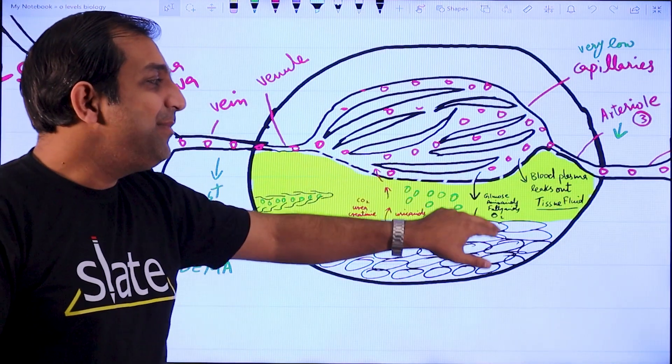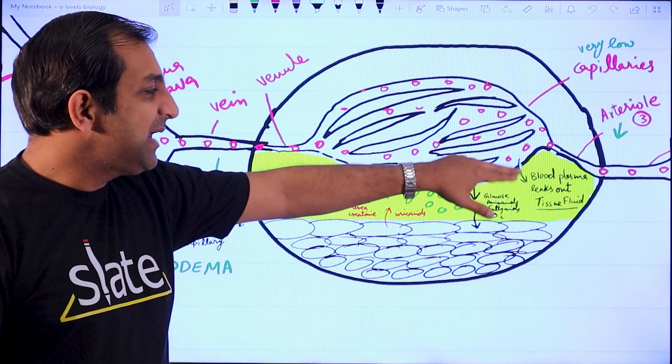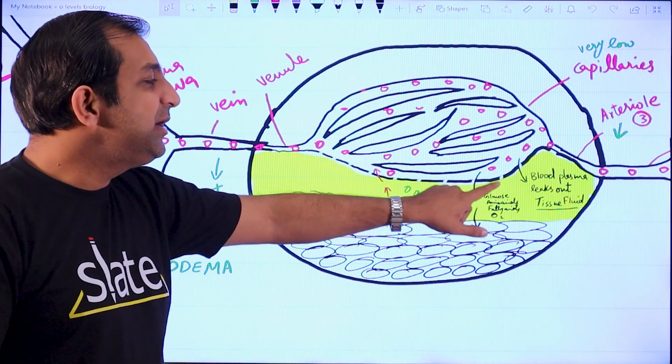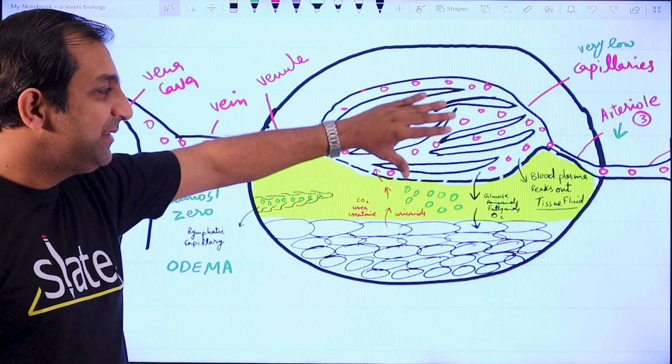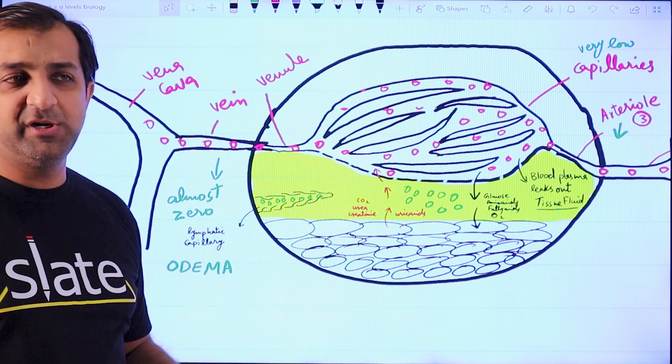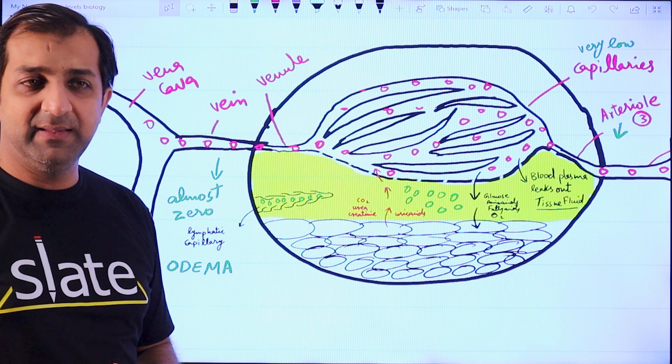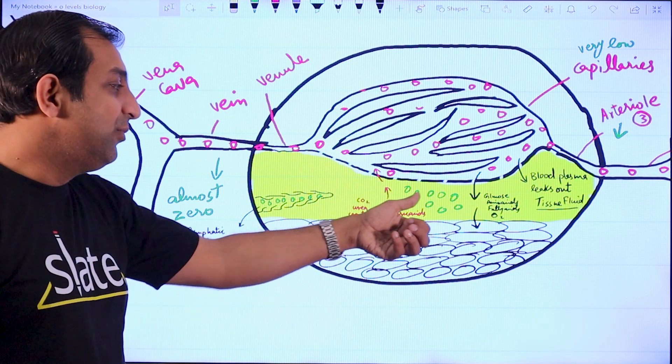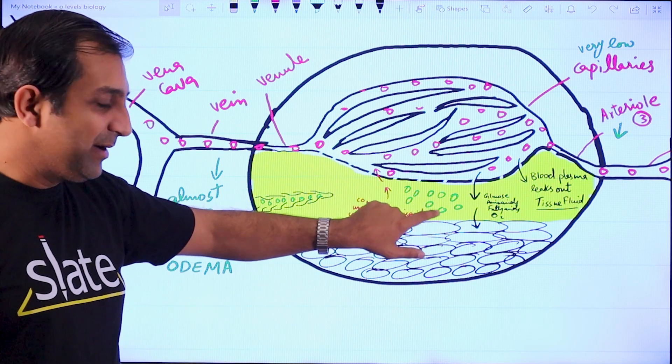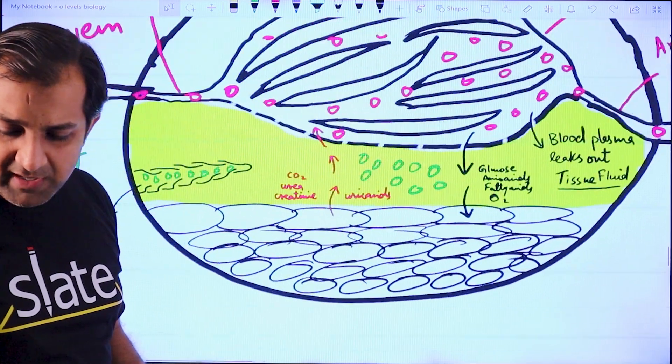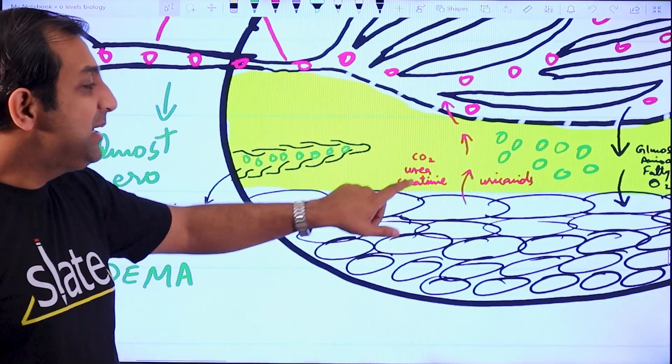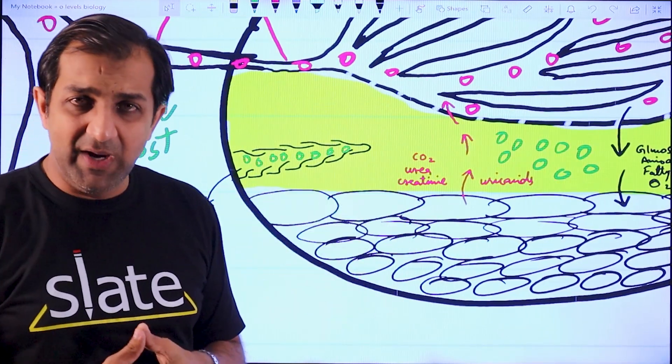Sometimes, because of the high blood pressure, some large proteins also tend to get out of the blood capillaries into this tissue fluid space. They are large enough that they can't go back here. If they are not removed from this space, they result into a situation which is called edema.